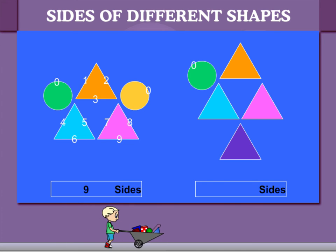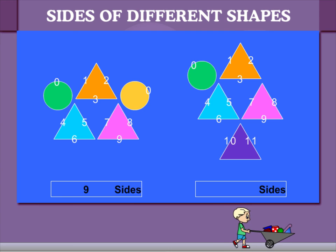Now the other group. 0, 1, 2, 3, 4, 5, 6, 7, 8, 9, 10, 11, 12. This group has 12 sides. It is more than nine sides.